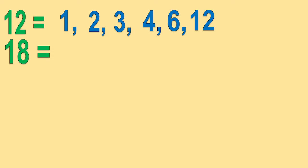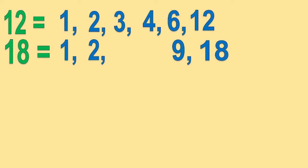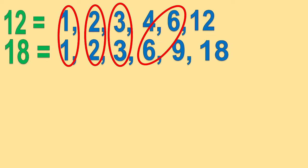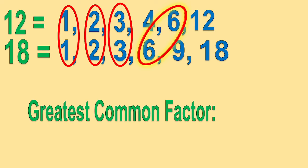How about 18? We have 1 times 18, 2 times 9, and 3 times 6. Now, encircle the common factors. We have 1, 2, 3, and 6. Identify the largest number in common — we have 6. So the greatest common factor is 6.